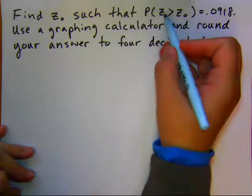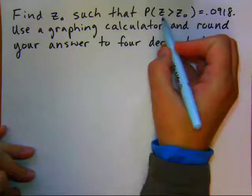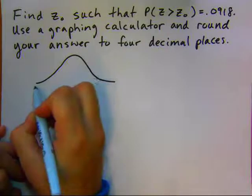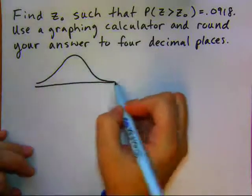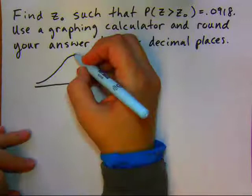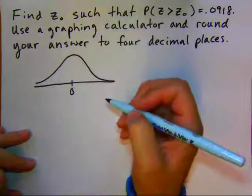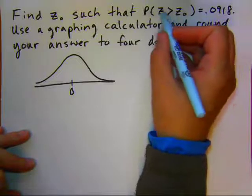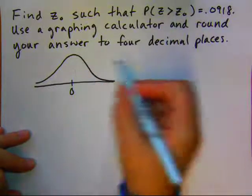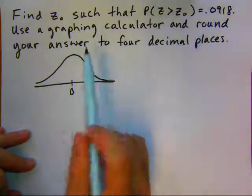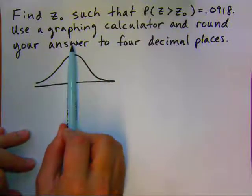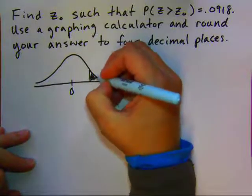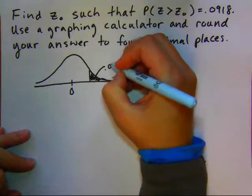Always start these problems, first of all, because it's talking about Z, with your standard normal distribution curve. That's part of showing your work and it really helps identify if you have an answer that's correct, thinking about zero as our mean here in the middle. We want the area bigger than some value. We want the right-hand area equal to 0.0918. The mean is 50%, so if we need a value smaller than 50%, it's got to be up here in the tail somewhere. So this area is the given area.